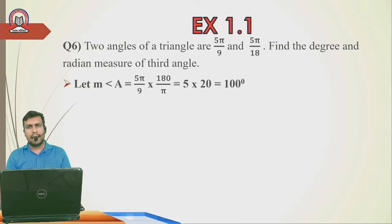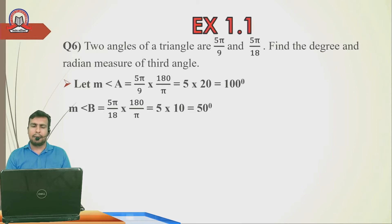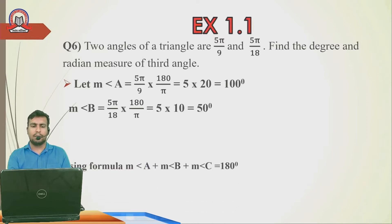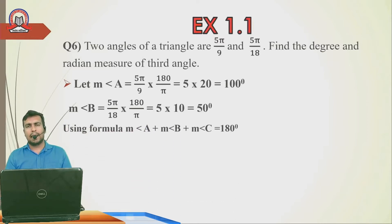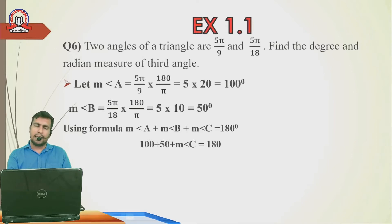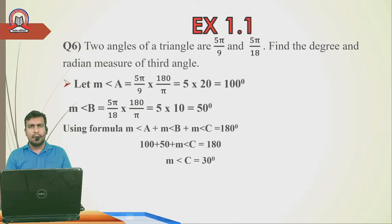Now finding the third angle: using Angle A + Angle B + Angle C = 180°, we put 100 + 50 + Angle C = 180°. Adding 100 + 50 = 150, so Angle C = 180 − 150 = 30°.